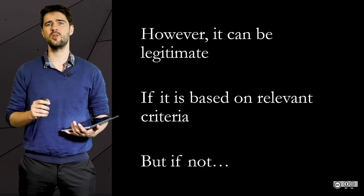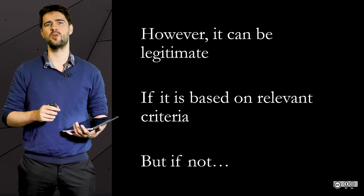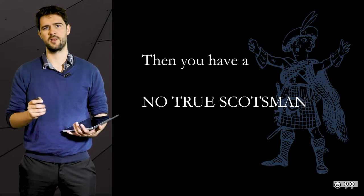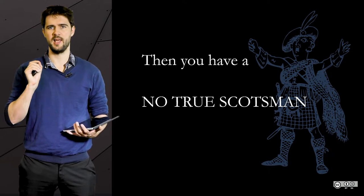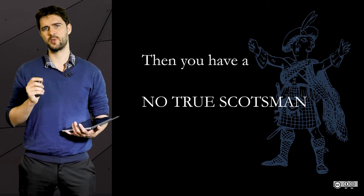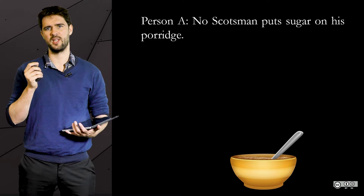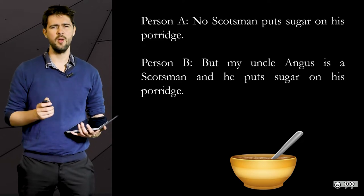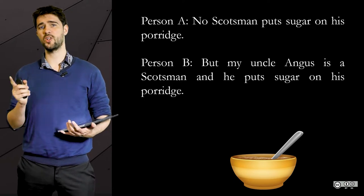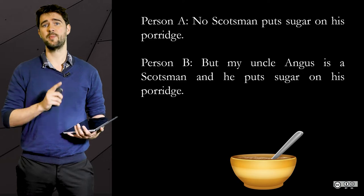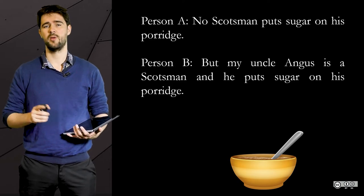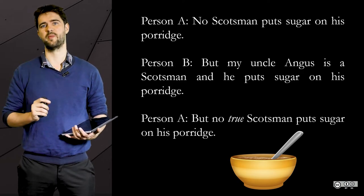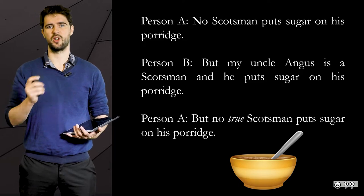And then it becomes what is called a No True Scotsman, which is a reference to the following dialogue. Person A: 'No Scotsman puts sugar on his porridge.' Person B: 'Oh, but my uncle Angus is a Scotsman and he puts sugar on his porridge.' Person A: 'But no true Scotsman puts sugar on his porridge.'